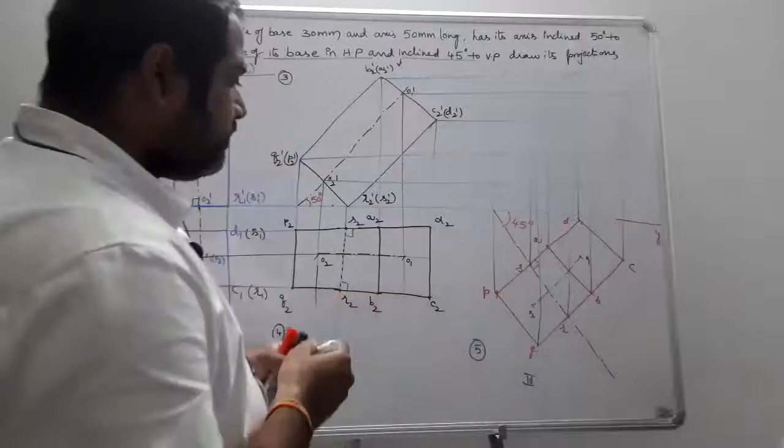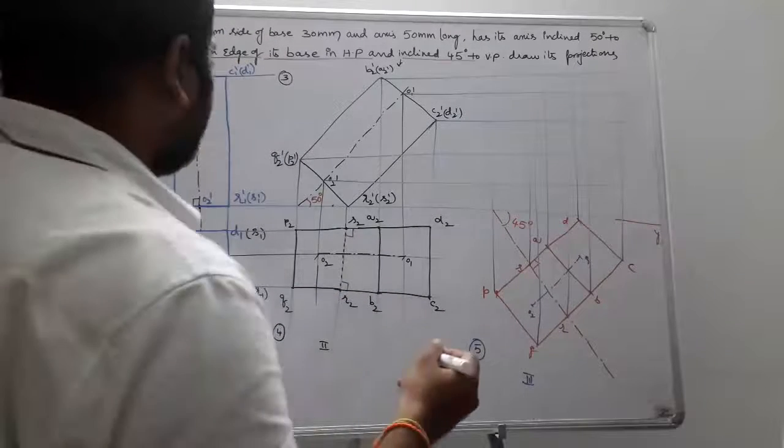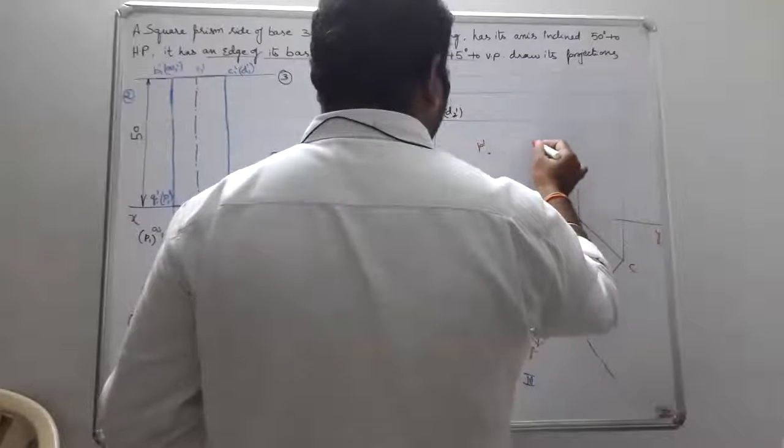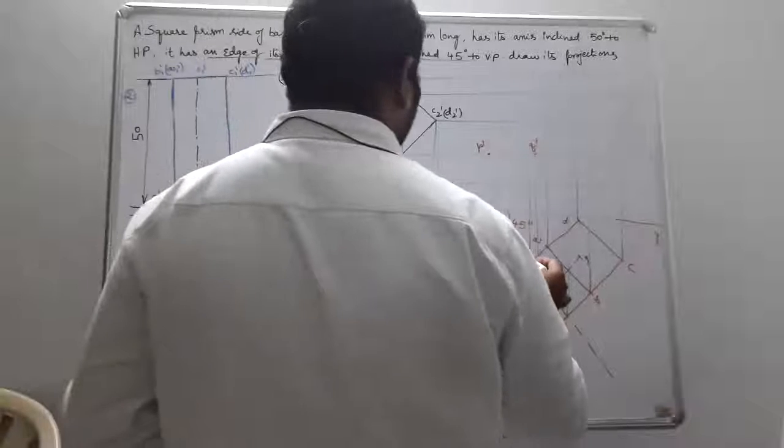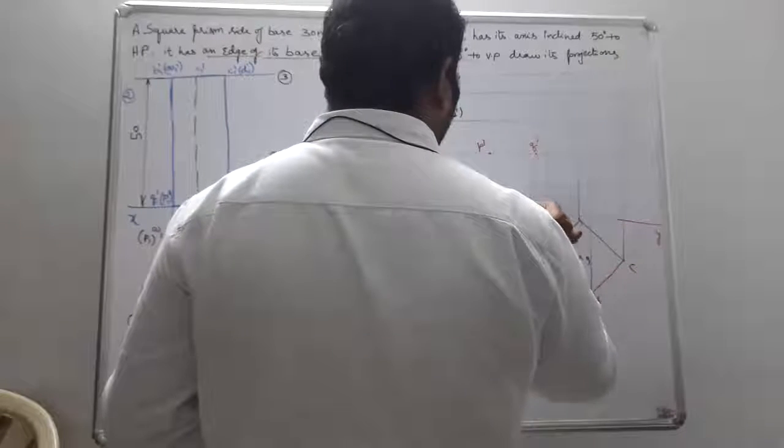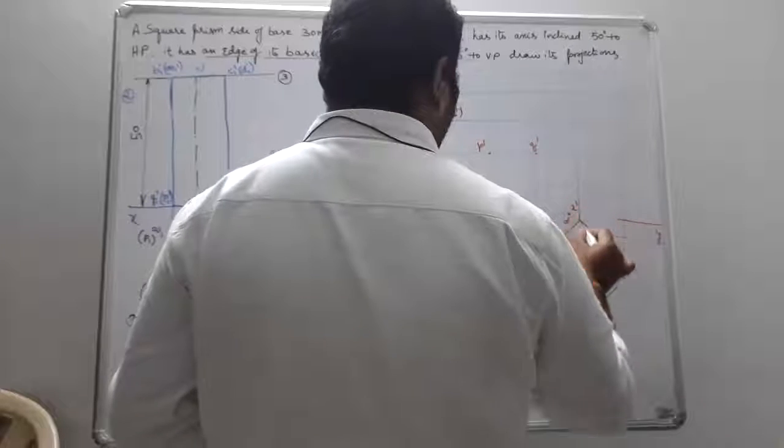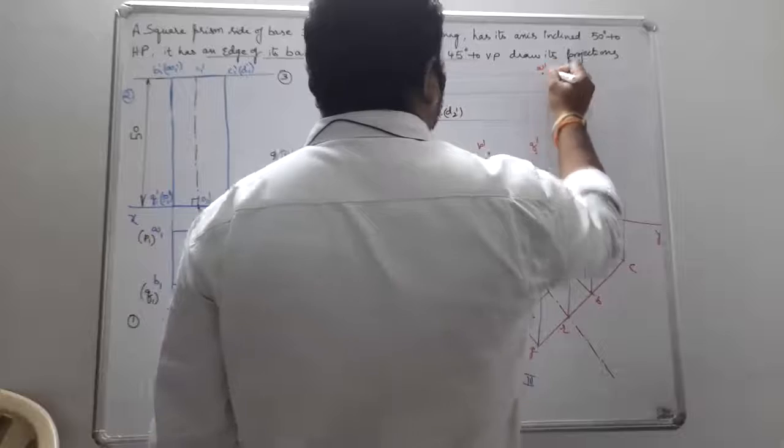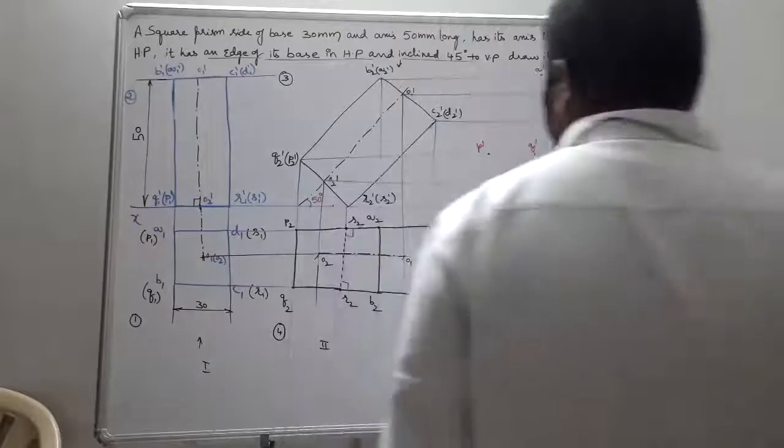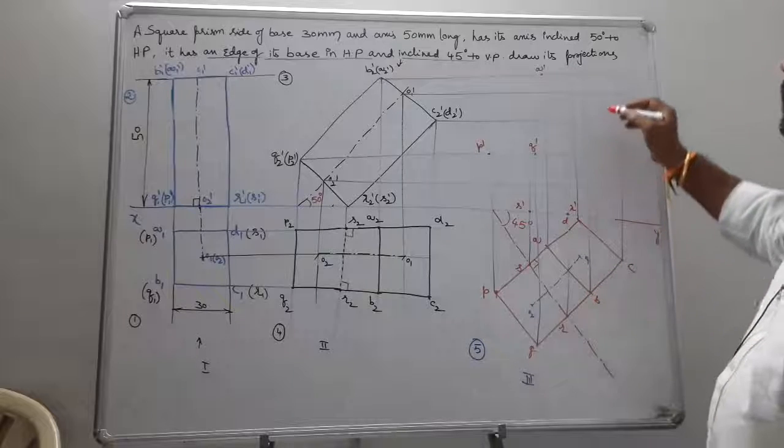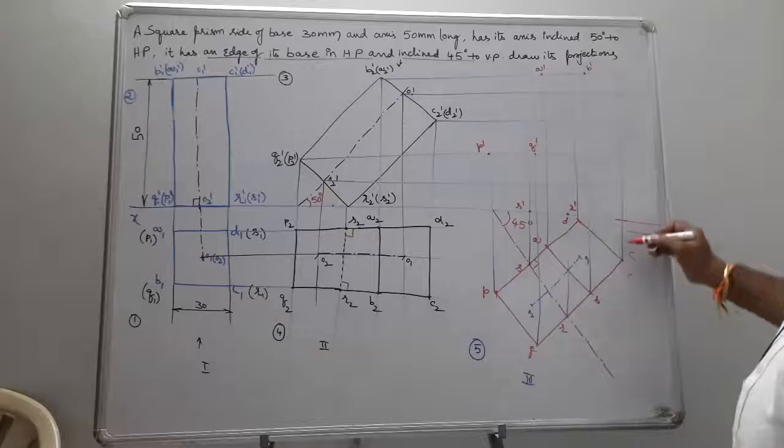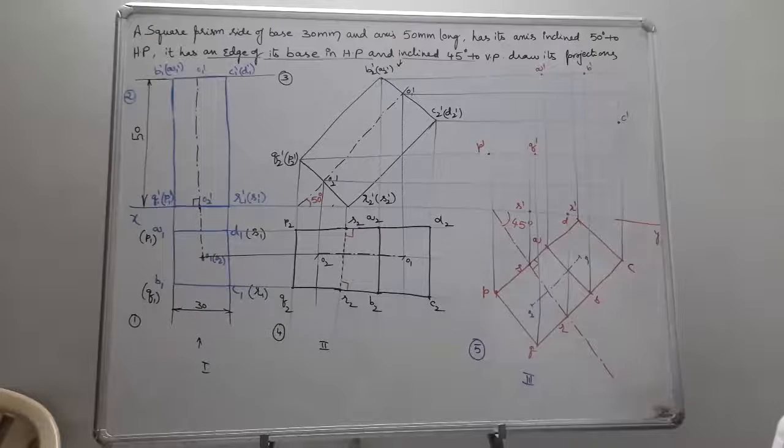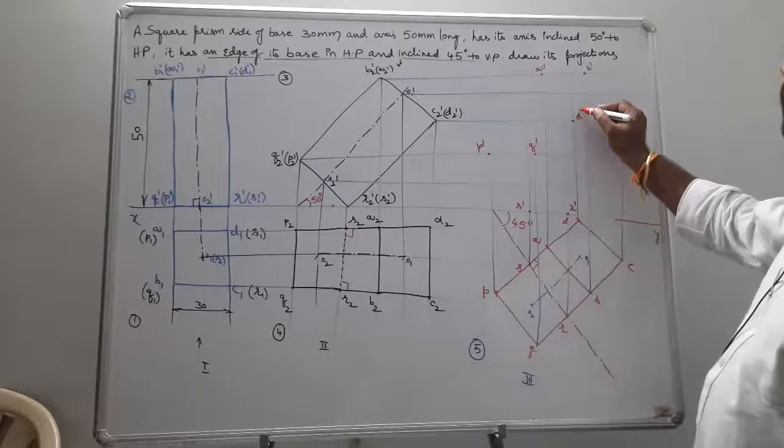Mark the intersection points. This becomes P dash, Q dash, S dash, R dash. Next, here it is A dash, then B dash, C dash, and this is D dash.